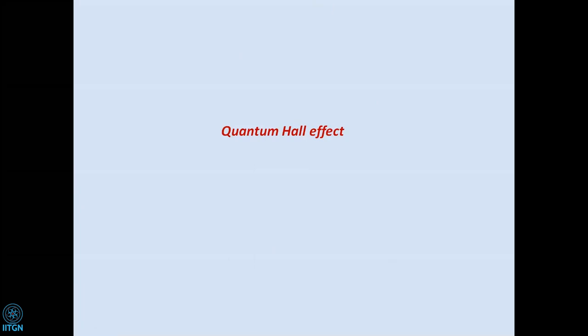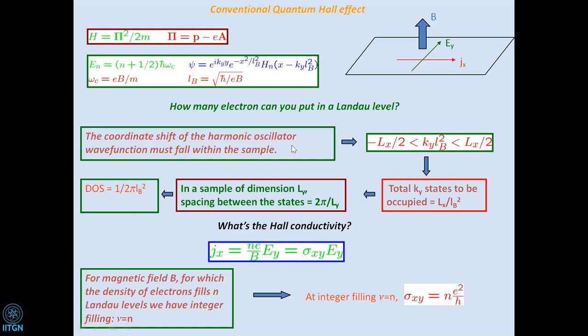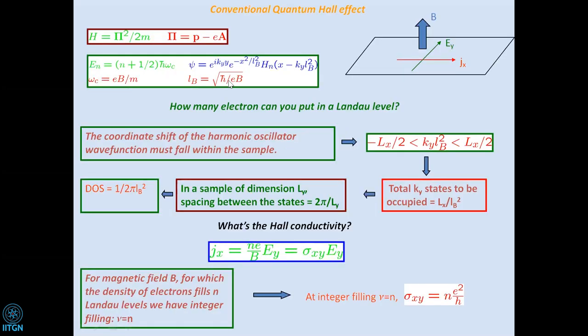Welcome everybody. Let me start from where I left off in the last lecture. Let's begin with the quantum Hall effect. This is certainly a phenomenon we've known since the 1980s, and it is one of the first examples where effects of topology in condensed matter physics were properly understood.